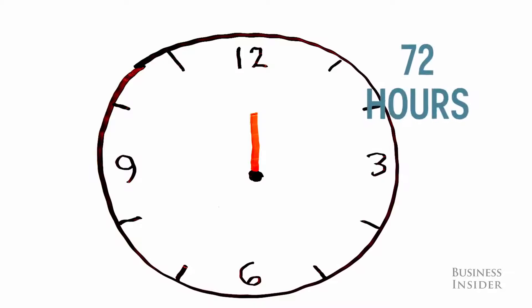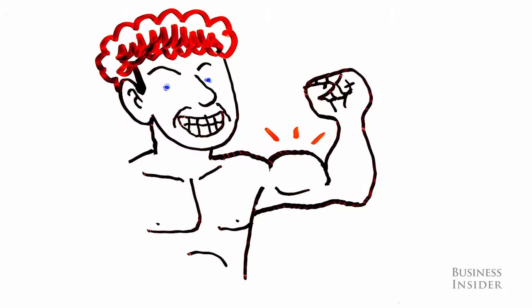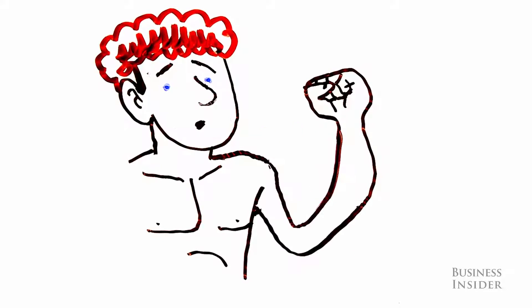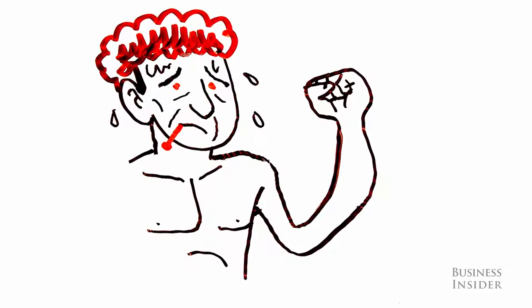After 72 hours, your body is scrambling for energy. Next on its list: protein. It starts breaking down your muscles for fuel as they waste away. All while your immune system is breaking down without vitamins and minerals, making you vulnerable to disease.